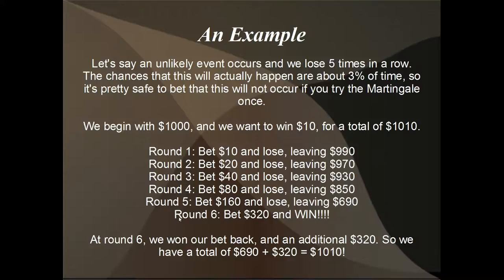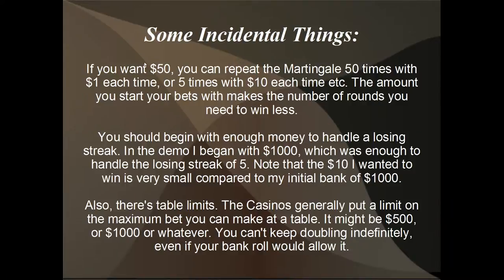We'd be stressing at this point. But round six, as is inevitable, we bet three hundred and twenty dollars and we win. We get our bet back — three twenty — which takes us back up to six hundred and ninety, plus we win three hundred and twenty, giving us our extra ten dollars. One thousand and ten dollars. So it doesn't matter if you lose a couple of times or win straight away — you still get your ten dollars.